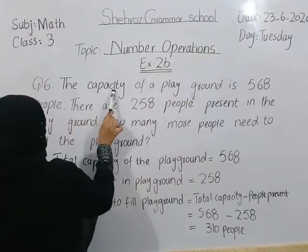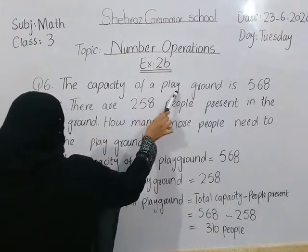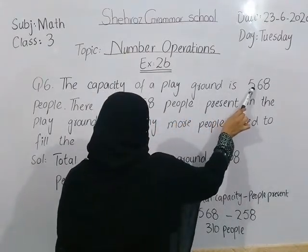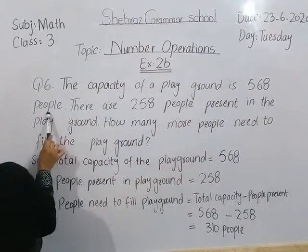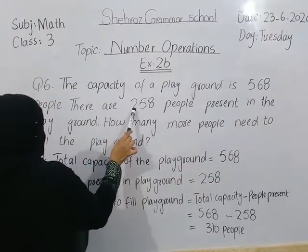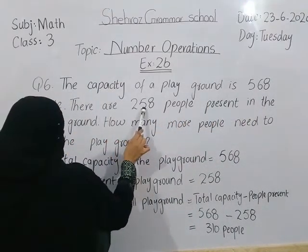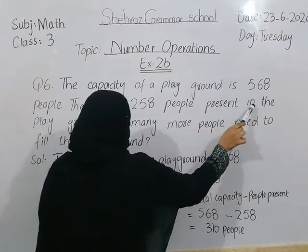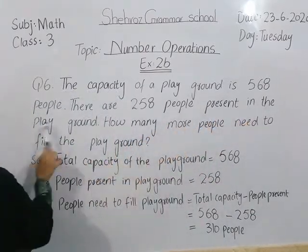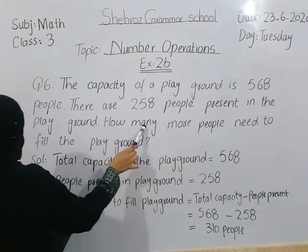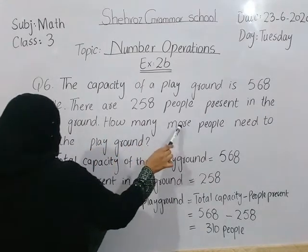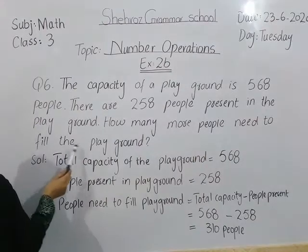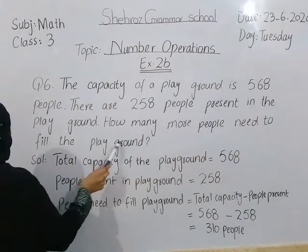The capacity of a playground is 568 people. There are 258 people present in the playground. How many more people need to fill the playground?